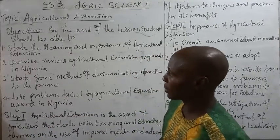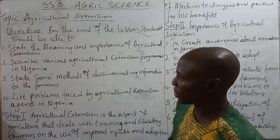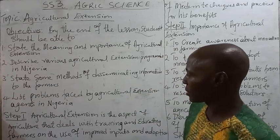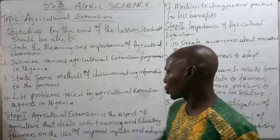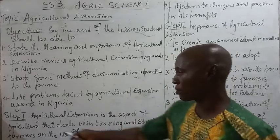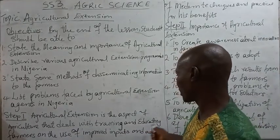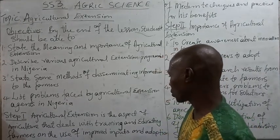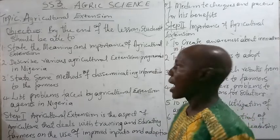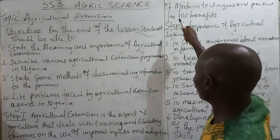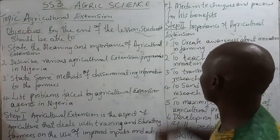We now look at the first objective, which is the meaning and importance of agricultural extension. Agricultural extension is the aspect of agriculture that deals with training and educating farmers on the use of improved inputs and the adoption of modern techniques and practices for its benefits.